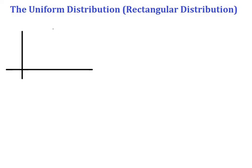Hello everyone. In this video we are going to cover the uniform distribution, also called the rectangular distribution. The uniform distribution is one of the continuous distributions and has a random variable x restricted to a finite interval a comma b. It is denoted by x uniform with two parameters a and b, where a and b define the interval.